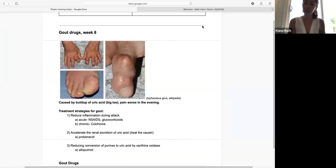Hi, I'm Kiana Rush. This is week eight of pharmacology tutoring for Southwest College of Naturopathic Medicine, and today we're going to be talking about drugs for gout. These images depict gout. It most commonly affects the big toe, and when these crystals of uric acid build up, they're actually called tophi and it'll be called tophaceous gout when these crystals form.